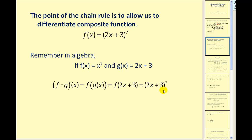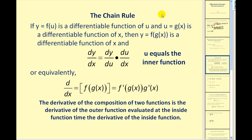So we can use something called the chain rule to find the derivative of this, and it will shorten our work dramatically. Here's what the chain rule says: if y equals f of u is a differentiable function of u, and u equals g of x is a differentiable function of x, then y equals f of g of x is a differentiable function of x, and dy/dx equals dy/du times du/dx.